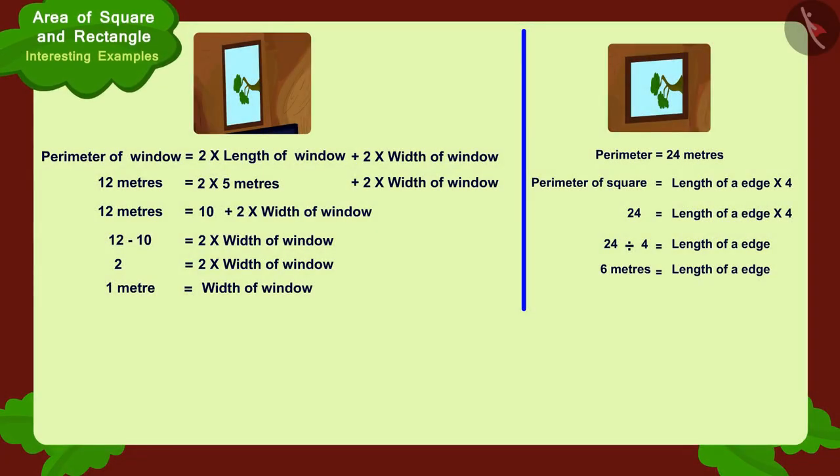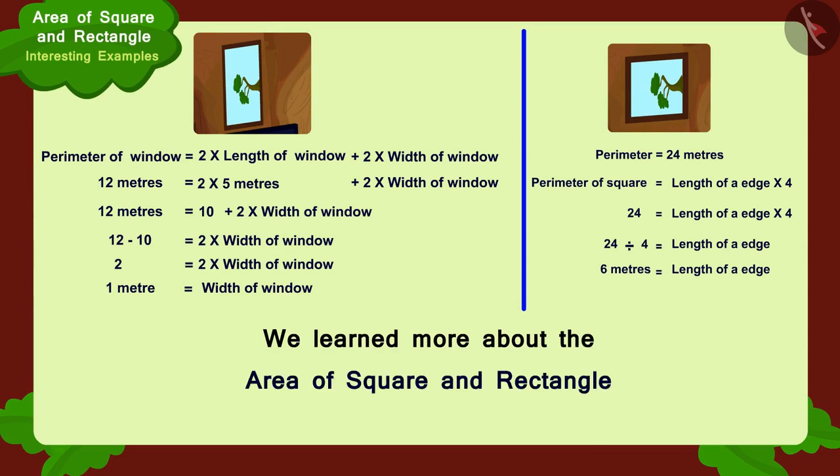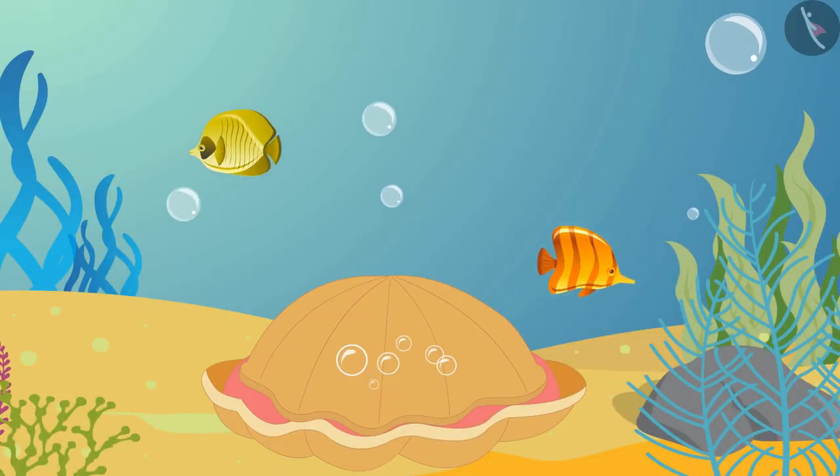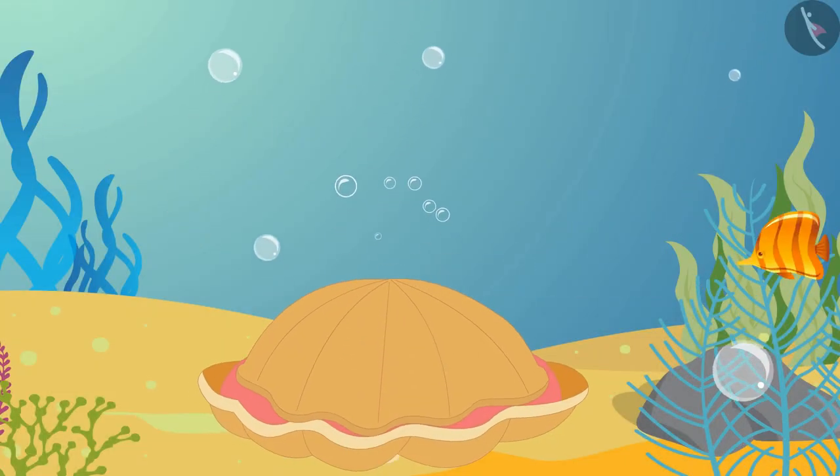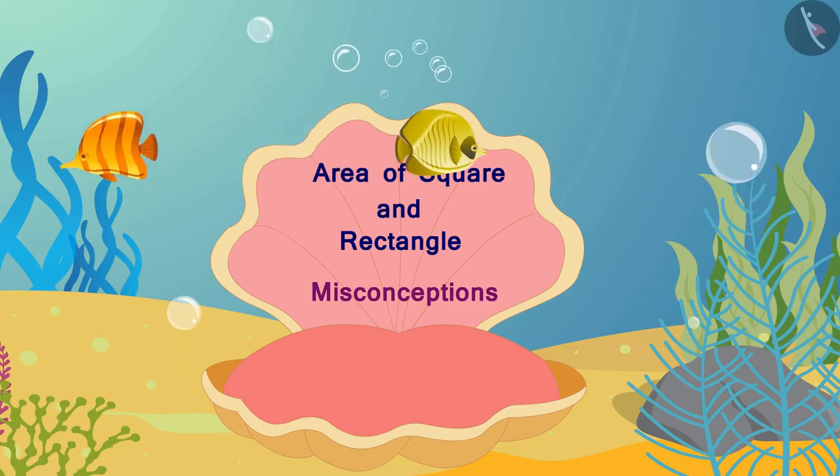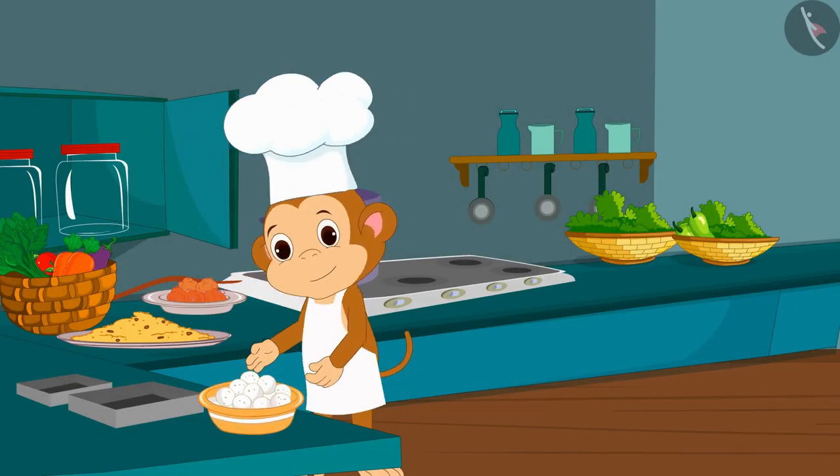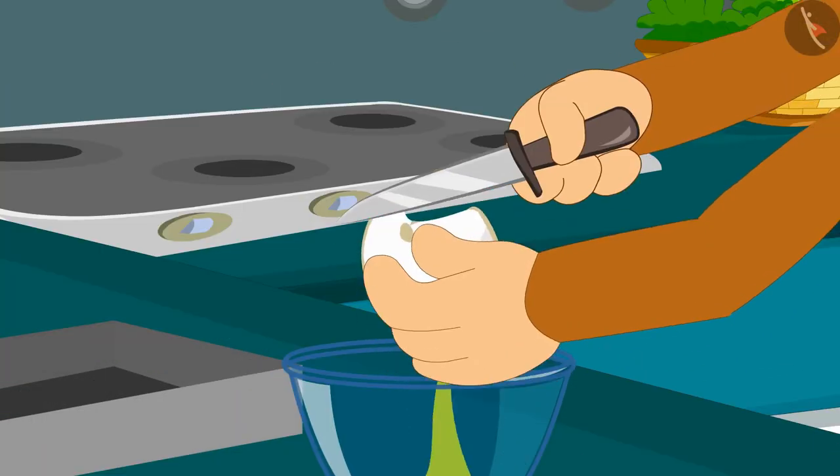Hello children, in the previous video we learned more about the area of square and rectangle through some interesting examples. In this video we will see some of the misconceptions related to this. Babban is preparing to bake a cake for Bunno's birthday.